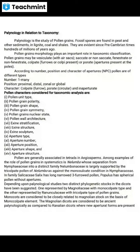Pollen grains are generally associated in tetrads in angiosperms — tetrad form meaning a triangular grouping. An example of the role of pollen grains in systematics is Nelumbo, whose separation from Nymphaeaceae into a distinct family, Nelumbonaceae, is largely supported by the tricolpate pollen of Nelumbo, as against the monosulcate condition — where there is only one polar furrow present.